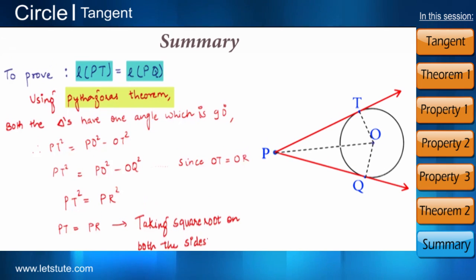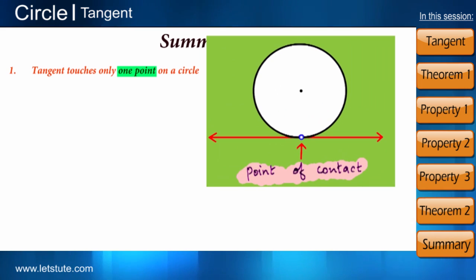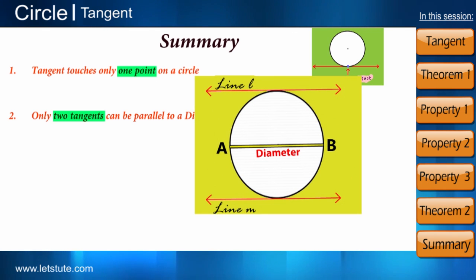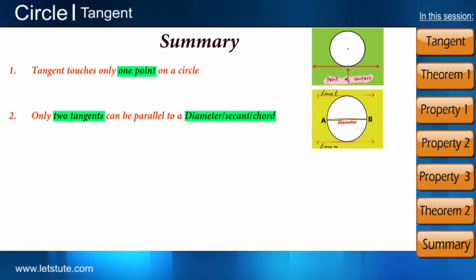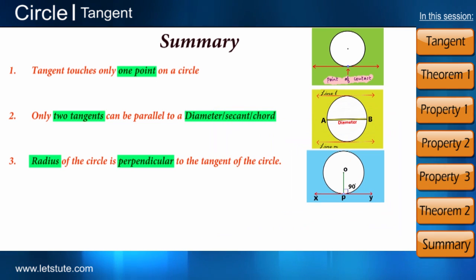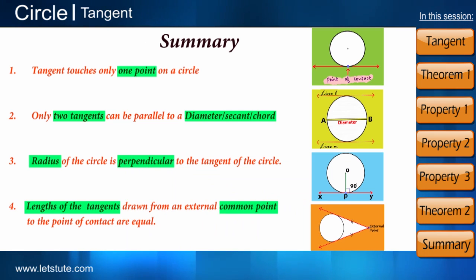So friends, let us summarize what we have studied in this session of tangents. Tangents touches only one point on a circle. Only two tangents can be parallel to a secant or a chord. Radius of the circle is perpendicular to the tangent of the circle. Length of the tangents drawn from external common point to the point of contact are equal.